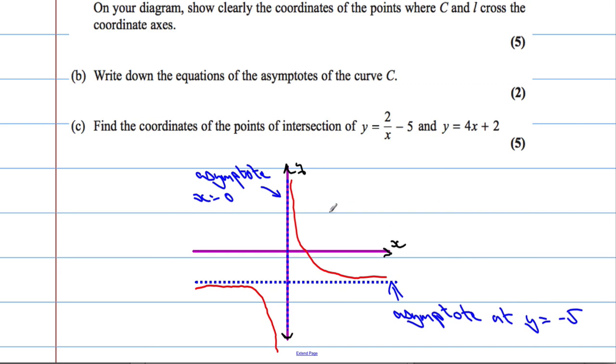Okay. That's the curve C. So let's just mark that. Red. That's y equals 2 over x minus 5. And then we want the other function, y equals 4x plus 2. It's a linear graph with a gradient of 4 and a y-intercept at 2.